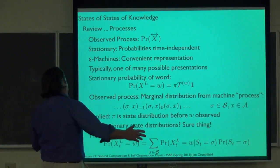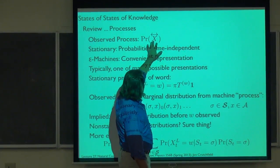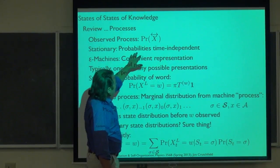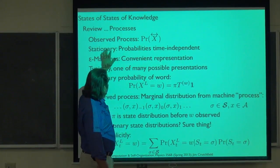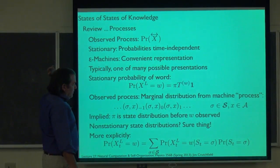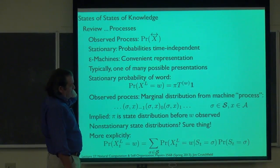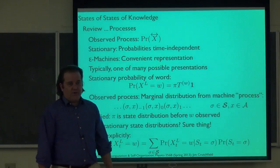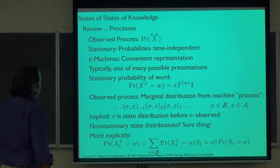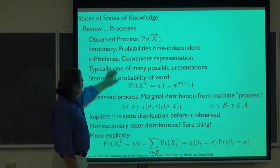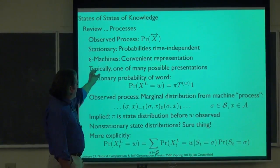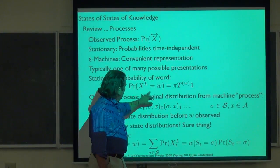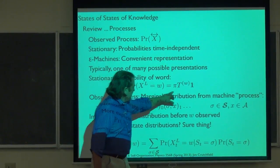For processes, we have our observed process — the giant joint distribution of the bi-infinite chain of random variables. Typically we assume all marginals are time-independent, so it's stationary. The epsilon machine is one convenient representation of the process, but there are alternatives. We choose these alternatives based on how useful they are. Given the epsilon machine, we can at least calculate word distributions using the simple vector-matrix multiply formula.